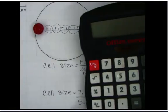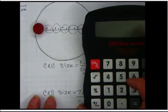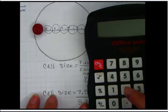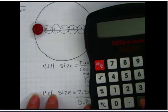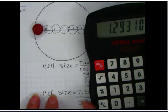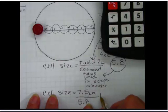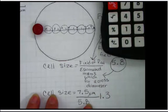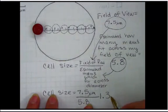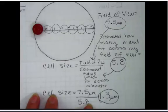And we said it was 7.5 divided by 5.8, and that equals 1.3 when I round. And don't forget my units. So my cell is 1.3 microns across.